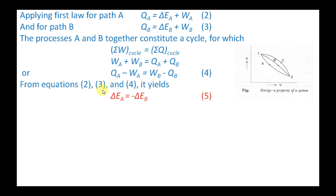From the first law equations: Q_A − W_A = ΔE_A (from equation for path A), and Q_B − W_B = ΔE_B (from equation for path B). Since we have W_B − Q_B on the right side, that becomes −ΔE_B. Therefore: ΔE_A = −ΔE_B. This is called equation 5.